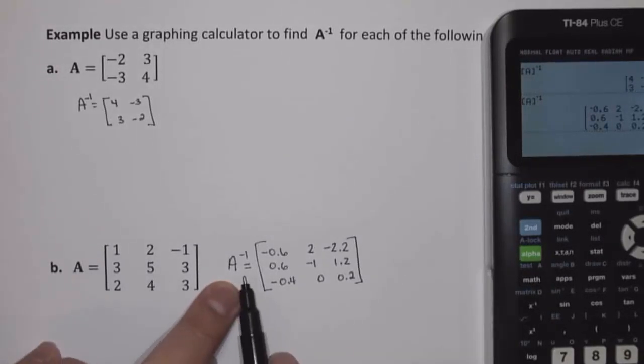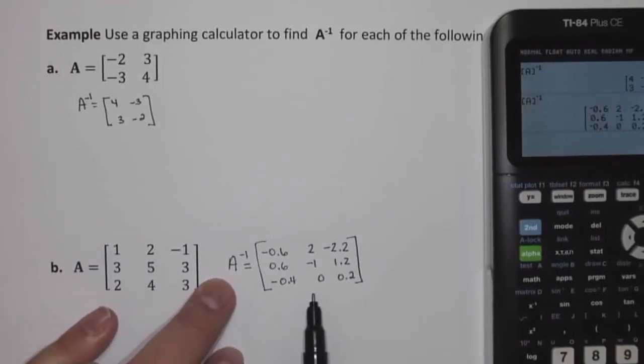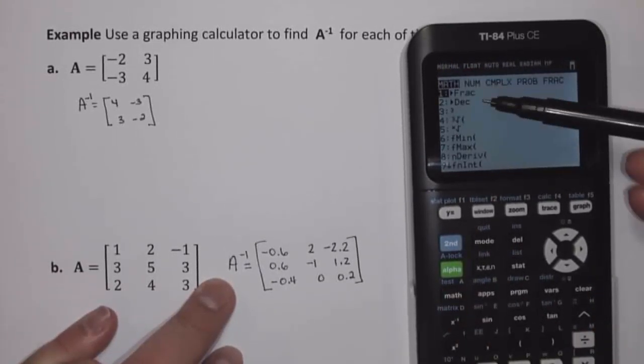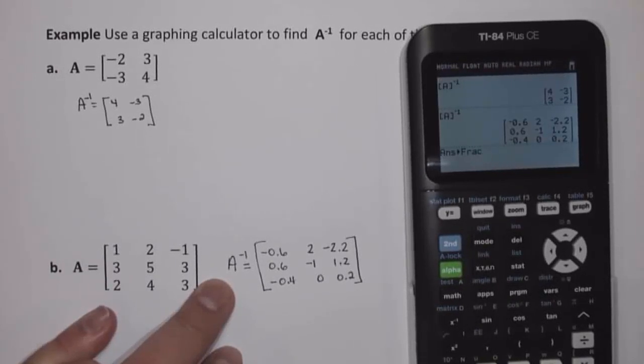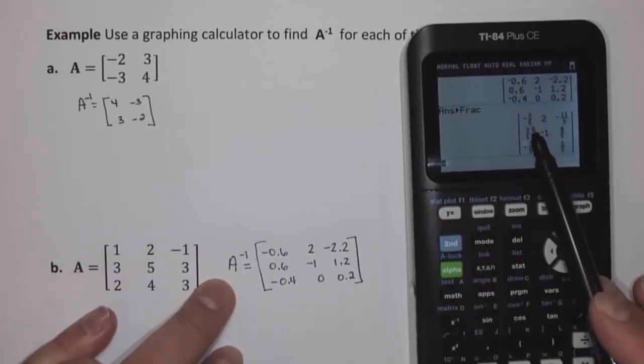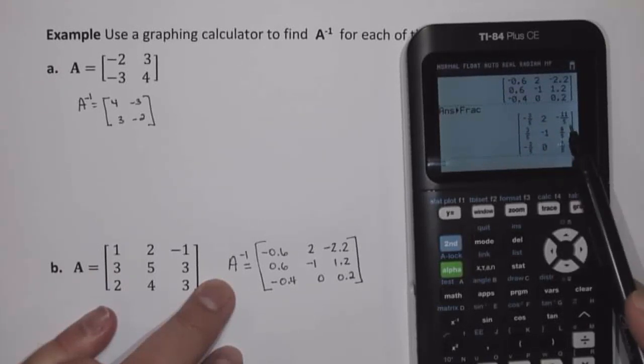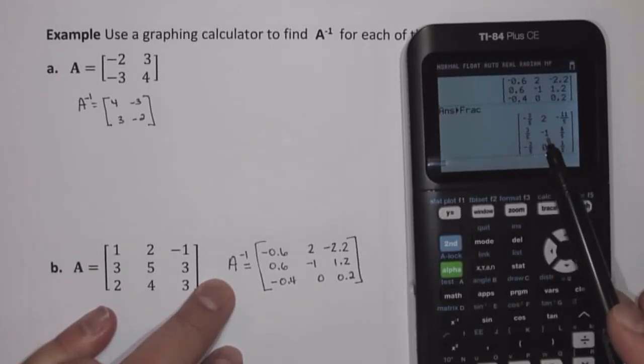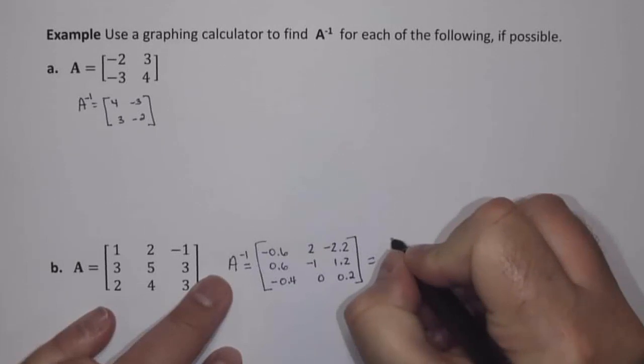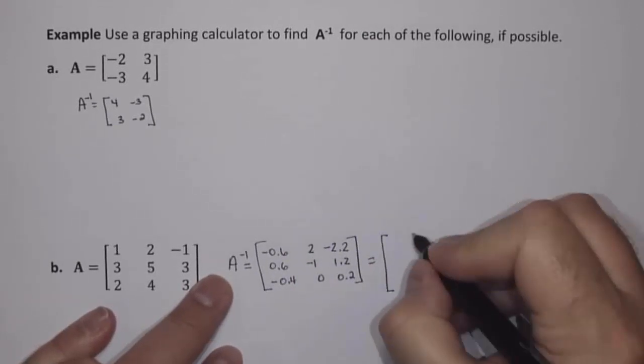So we have our inverse matrix in decimal form. If we would prefer to have that in fraction form, we can go to Math, and then use Option 1 to change to a fraction, and that gives us the result in fraction form: negative 3 fifths, 2, negative 11 fifths, 3 fifths, negative 1, 6 fifths, negative 2 fifths, 0, 1 fifth. So we could also write this as,